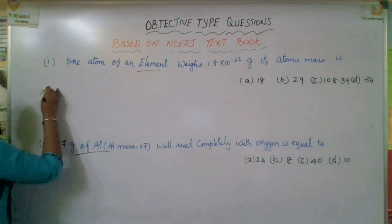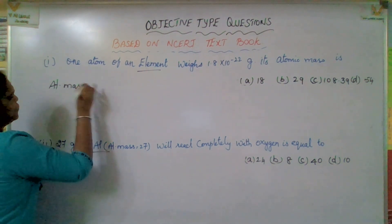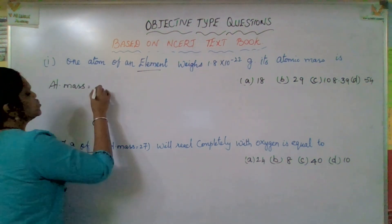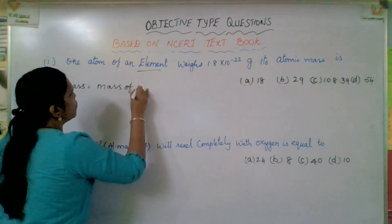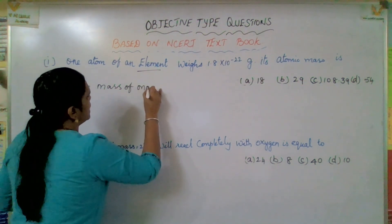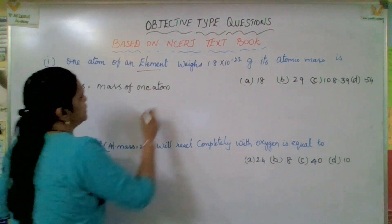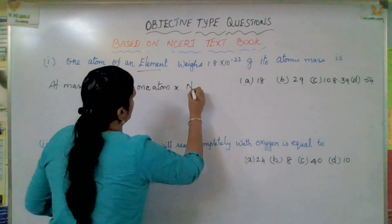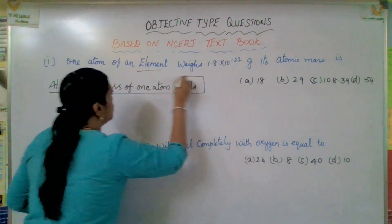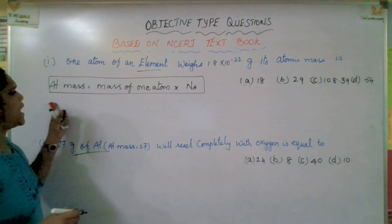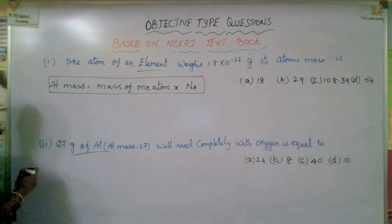They asked atomic mass. Atomic mass of an element — how to find it out? The formula is: mass of one atom of an element multiplied by Avogadro's number. That is the formula we should use. So, mass of one atom of an element into Avogadro's number.